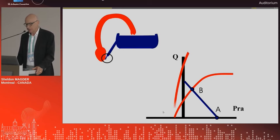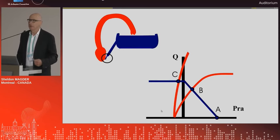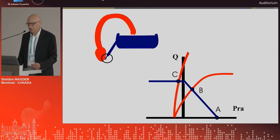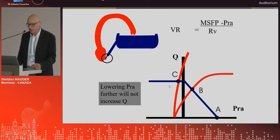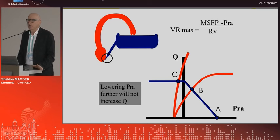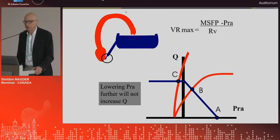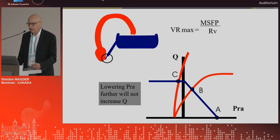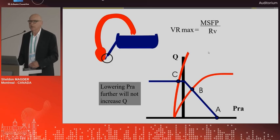Looking at that limit to venous return: if you have somebody on ECMO or a mechanical pump at cardiac surgery and you really suck on the system, once the pressure outside the great vessels is less than the inside pressure, you get vascular collapse — this limit to venous return. This is the concept of a vascular waterfall. When that happens, lowering right atrial pressure further does not increase venous return. If the ECMO pump is turned up too much, you get chatter in the tubes, reaching this maximum venous return. The maximum possible return is the mean systemic filling pressure divided by the resistance between them. After that, you cannot get more flow. The best the heart can do when breathing spontaneously is lower right atrial pressure to zero.